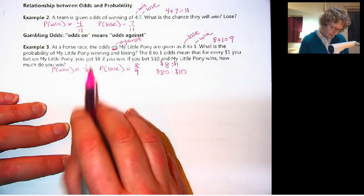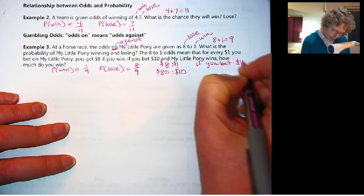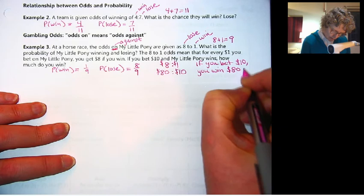But your chance of winning is only one out of nine. So if you bet $10, you win $80 if the horse wins.